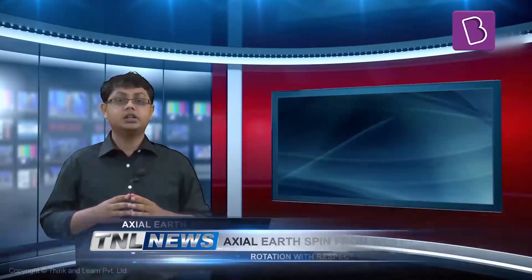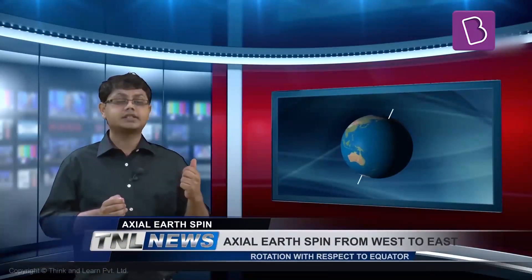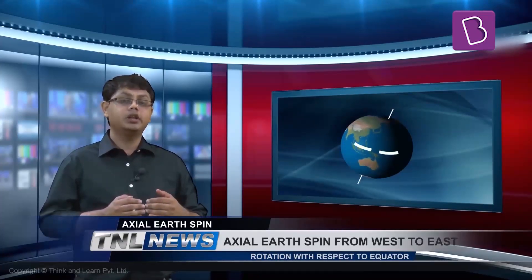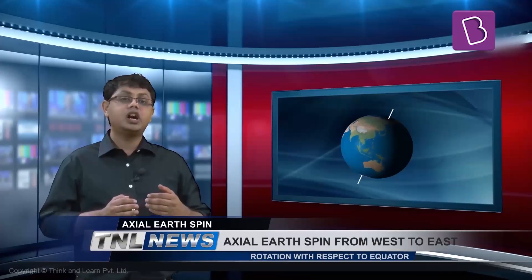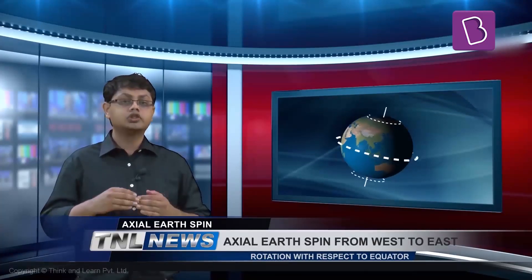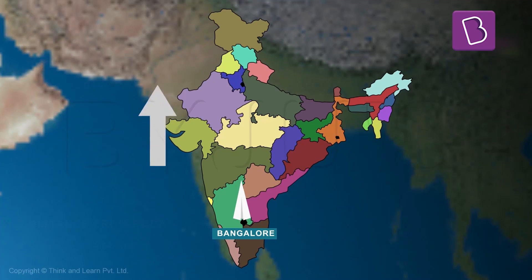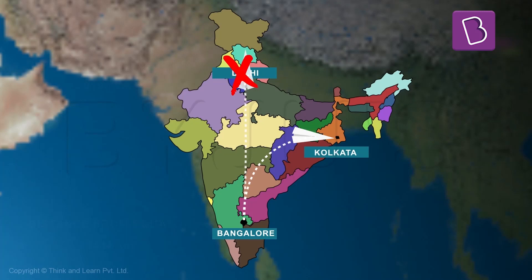Here's the basic idea. The earth is spinning on its axis from west to east. Because the earth is a sphere and is wider in the middle, the points on the equator are spinning faster than the points near the pole. So, imagine that you were standing in Bangalore and you had a magic paper aeroplane that could travel hundreds of kilometers. If you throw it directly north of Bangalore, you might expect that it will land somewhere in Delhi, but it does not.